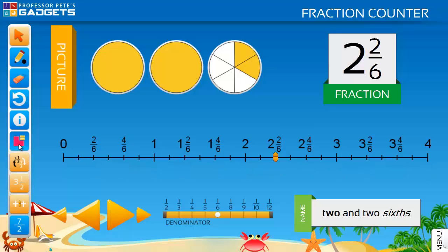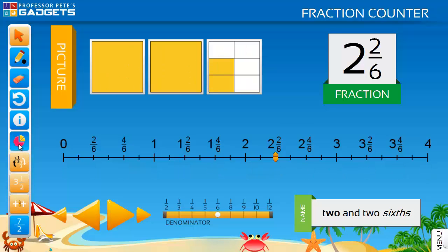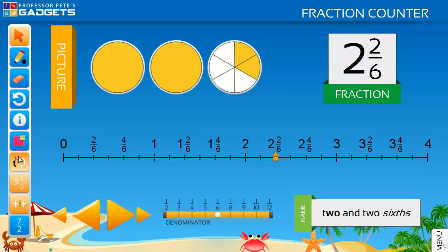The pictures of the shapes can be changed from circles to squares. The main fraction symbol box toggles between both forms of each fraction: improper fractions and mixed numbers.